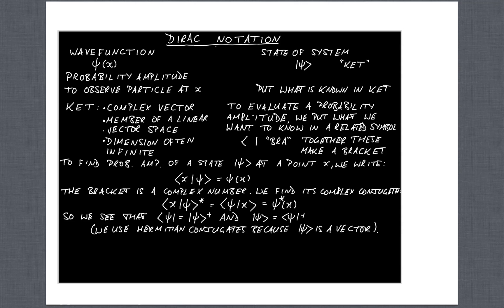You can see from this that bra psi is a Hermitian conjugate of ket psi. We use the dagger to represent the Hermitian conjugate.